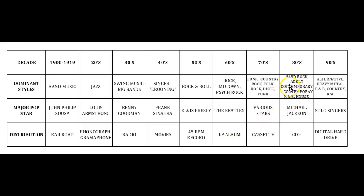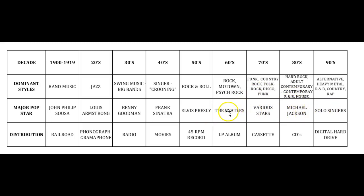In the 80s, hard rock, adult contemporary — what we call 80s rock today — R&B, and house come in. It's very different from rhythm and blues in the 50s. Black music is very, very strong here, whereas in the 50s black artists were not the stars. But in the 80s, boom — Michael Jackson blows everybody away. He's number one, he's the King of Pop, though he still doesn't have as many records sold as the Beatles. CDs came into play in the 80s as well.